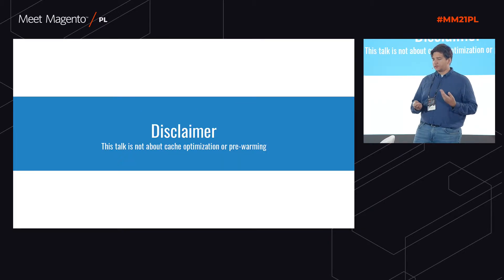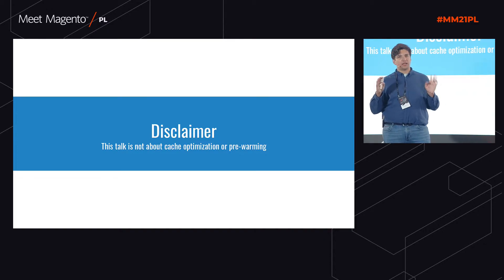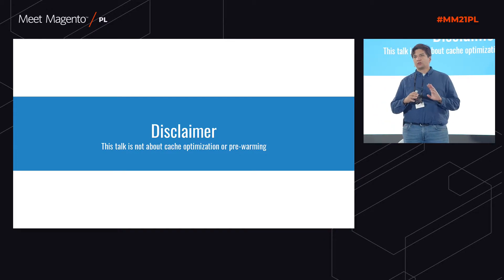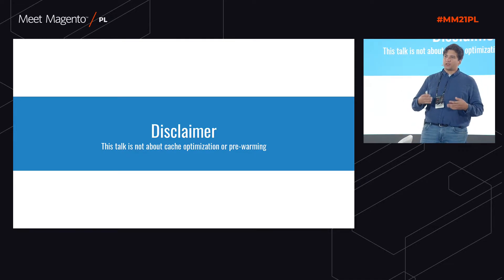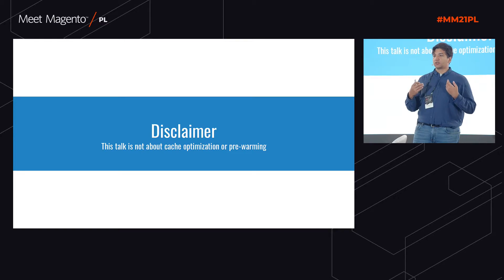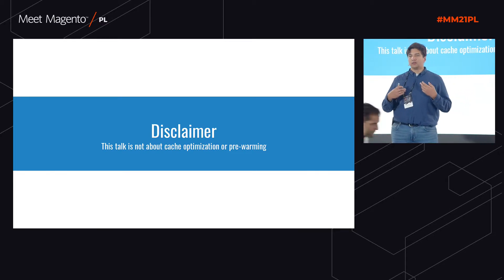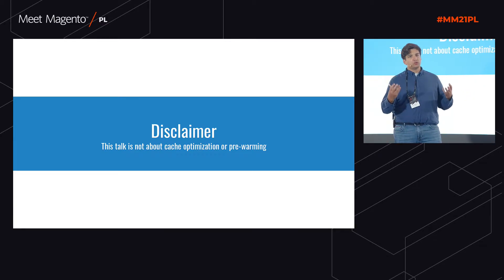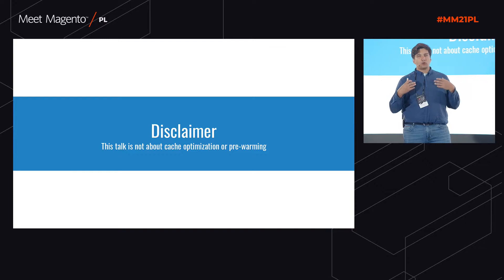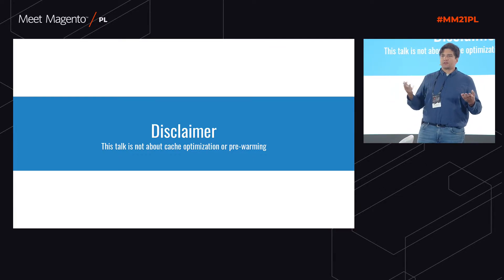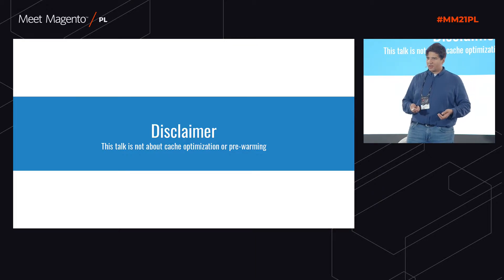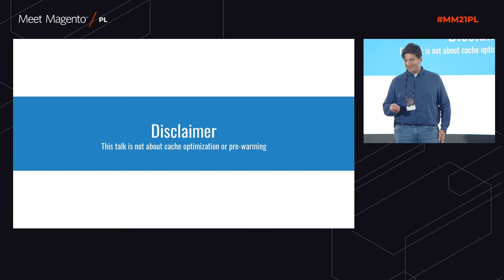A little bit of a disclaimer: this is not a talk about cache. We are not going to talk about caching stuff in Magento. This talk is about uncached versions of pages and how we can actually make them faster and reduce our resource spend on Magento back-end servers in order to serve pages, instead of just rising the number of servers exponentially.